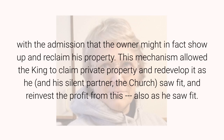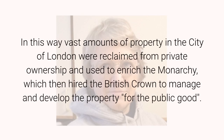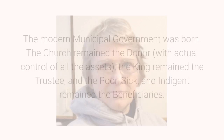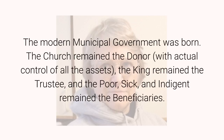This mechanism allowed the king to claim private property and redevelop it as he and his silent partner, the church, saw fit, and reinvest the profit from this also as he saw fit. In this way, vast amounts of property in the City of London were reclaimed from private ownership and used to enrich the monarchy, which then hired the British Crown to manage and develop the property for the public good. The modern municipal government was born.